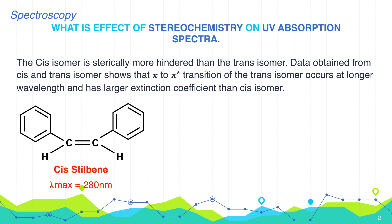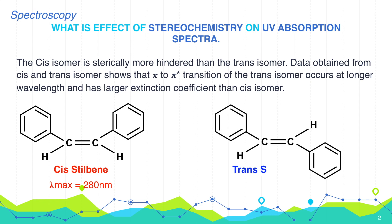For example, in cis-stilbene, both the bulkier phenyl groups are on the same side of the double bond. In this case, lambda max is 280 nanometers, while in the case of trans-stilbene, the phenyl groups are far apart and the transition occurs at the longer wavelength of 295 nanometers.